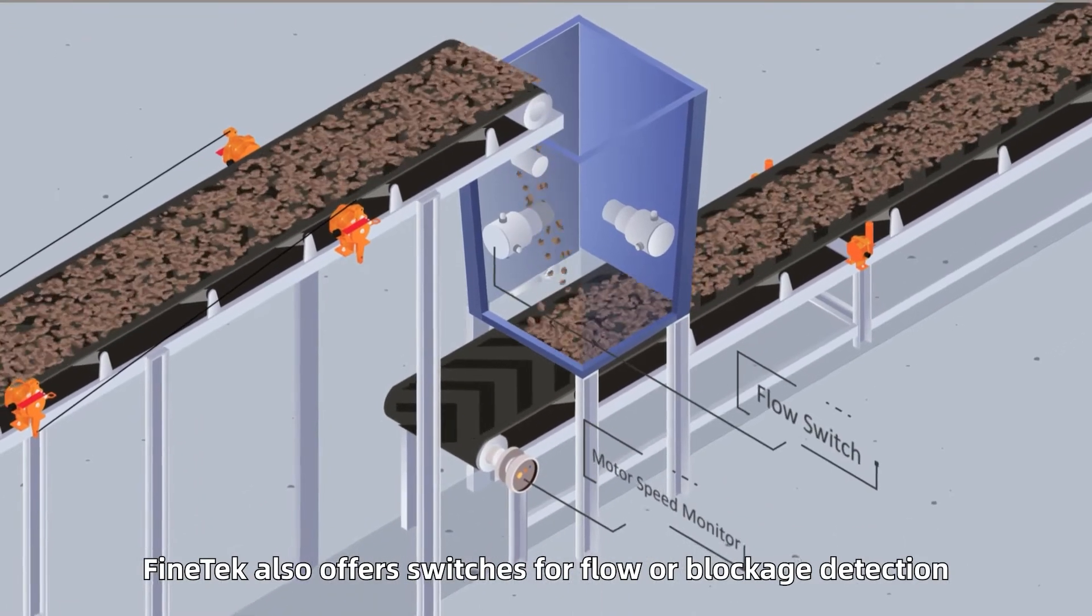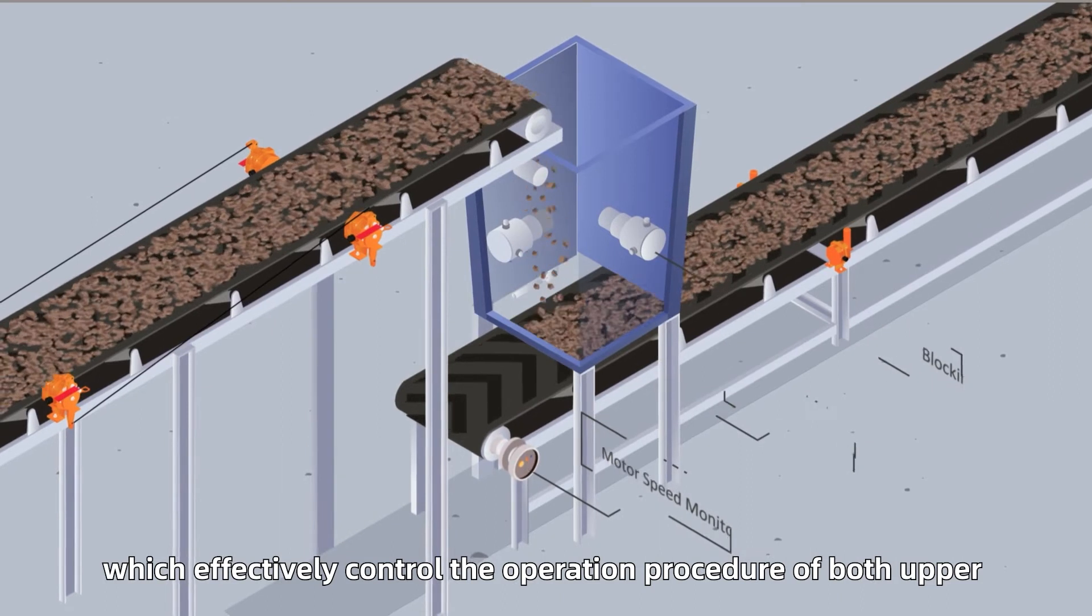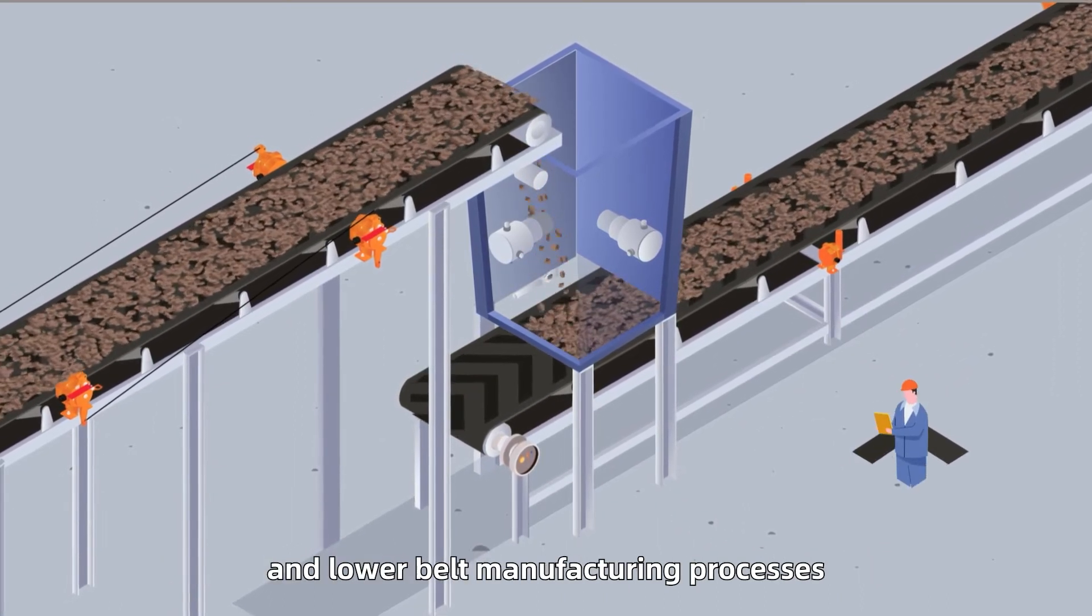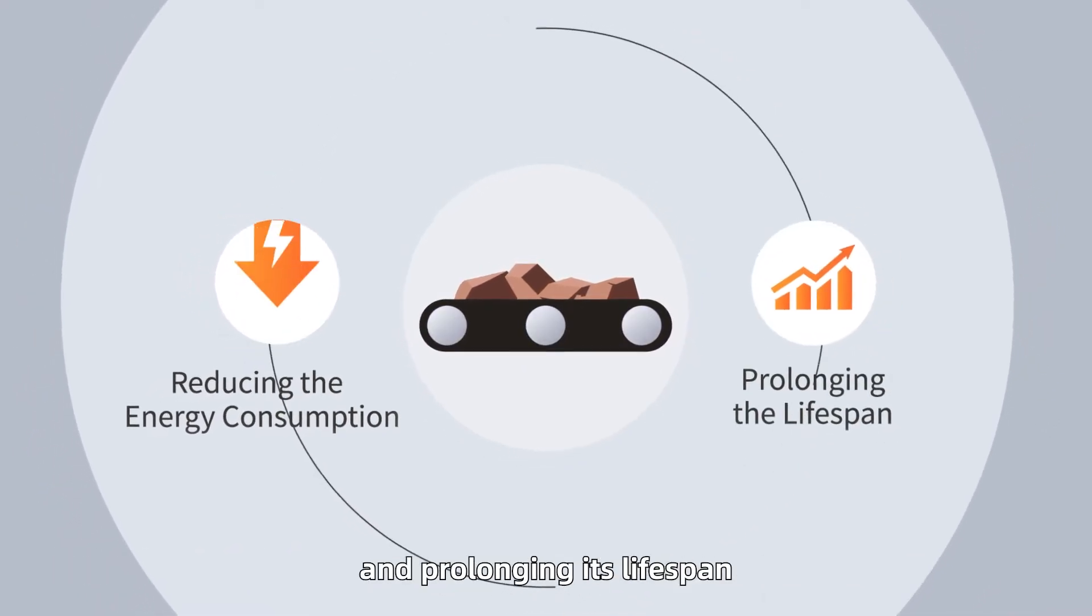FinTech also offers switches for flow or blockage detection, which effectively control the operation procedure of both upper and lower belt manufacturing processes, thus reducing the energy consumption of the belt conveying equipment and prolonging its lifespan.